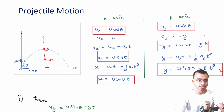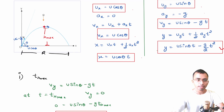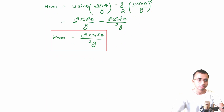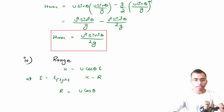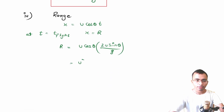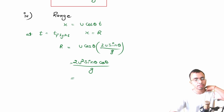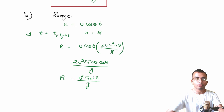Next we find the range — the horizontal distance covered by the particle during the total flight time. Range is the x-coordinate at t = t_flight, and x = u cos theta · t. So R = u cos theta · t_flight = u cos theta · (2u sin theta / g). Solving, R = u² · 2 sin theta cos theta / g, and since 2 sin theta cos theta = sin 2theta, we get R = u² sin 2theta / g. This is the formula for range.